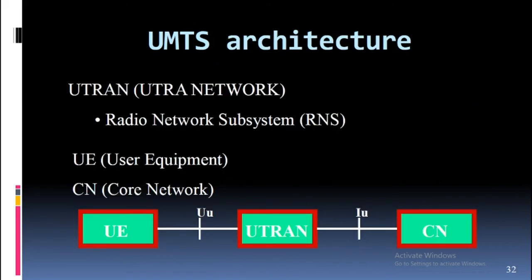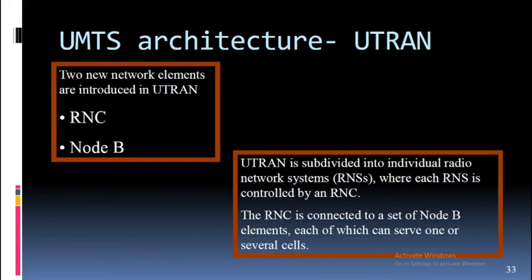UMTS architecture consists of: UTRAN (UTRA Network), Radio Network Subsystem (RNS), UE (User Equipment), and CN (Core Network), connected via Uu and Iu interfaces. Two new network elements are introduced in UTRAN: RNC and Node B. UTRAN is subdivided into individual Radio Network Systems (RNS), where each RNS is controlled by an RNC. The RNC is connected to a set of Node B elements, each of which can serve one or several cells.